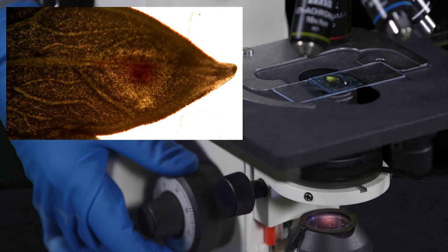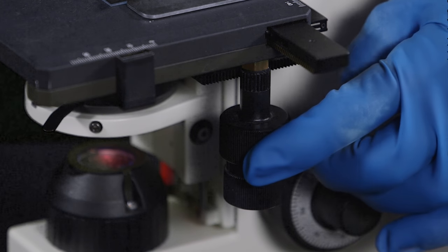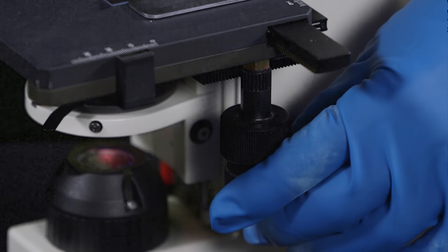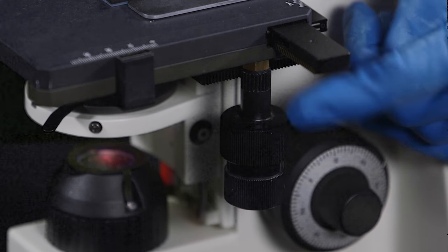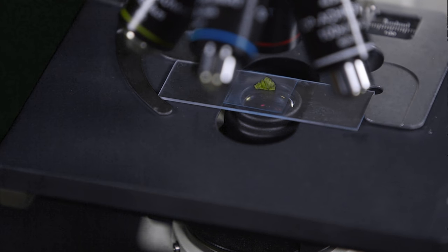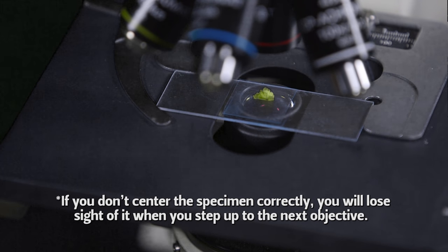When you are in focus with the lowest power objective, use the stage adjustment knobs to center your specimen in the field of view. Use both knobs. As you look through the oculars, one of the knobs will move your field of view horizontally, the other vertically. The stage will move side to side and back and forth.